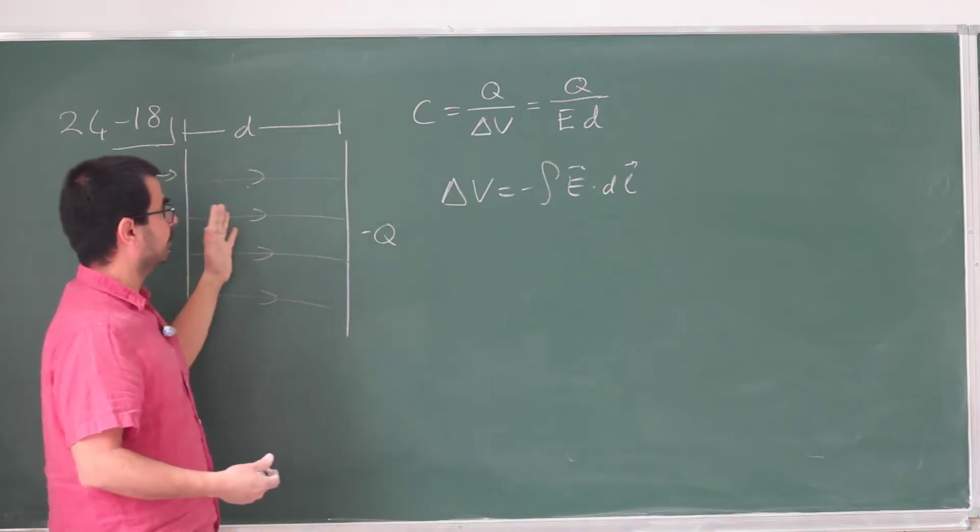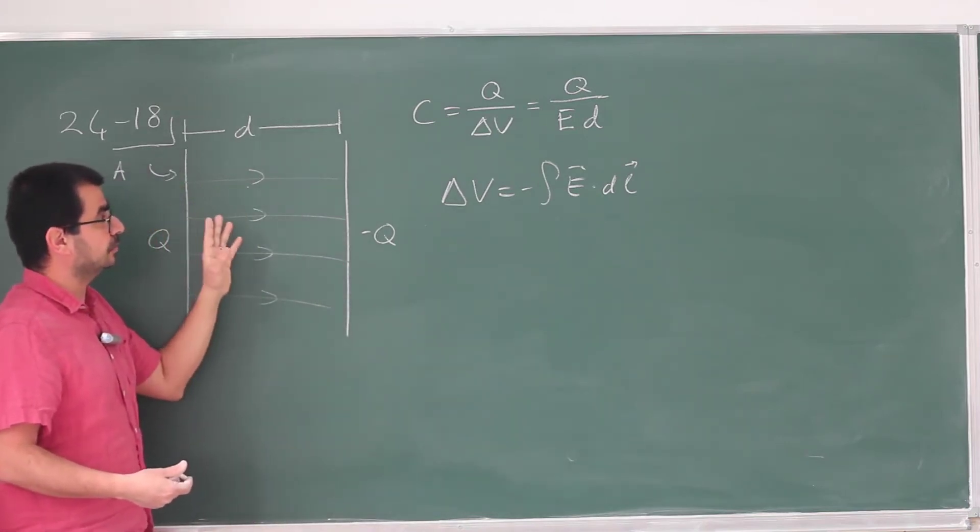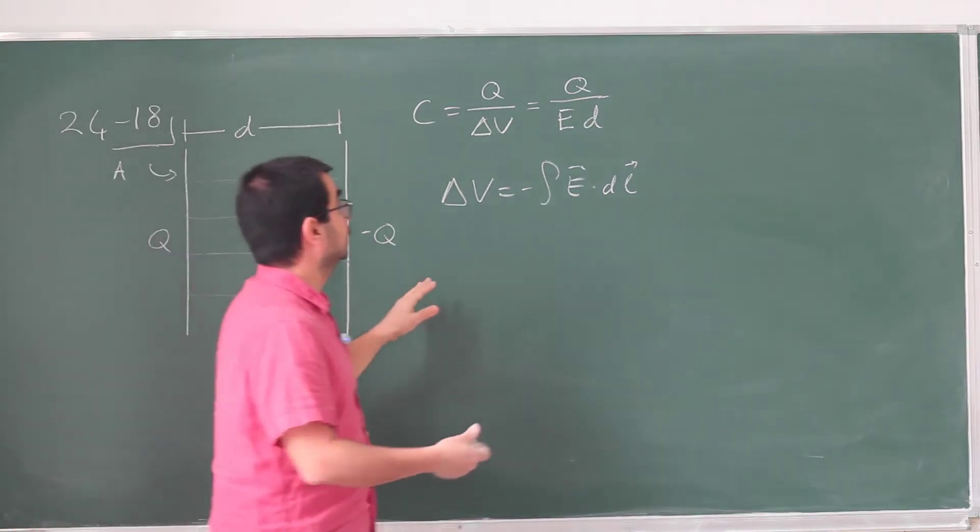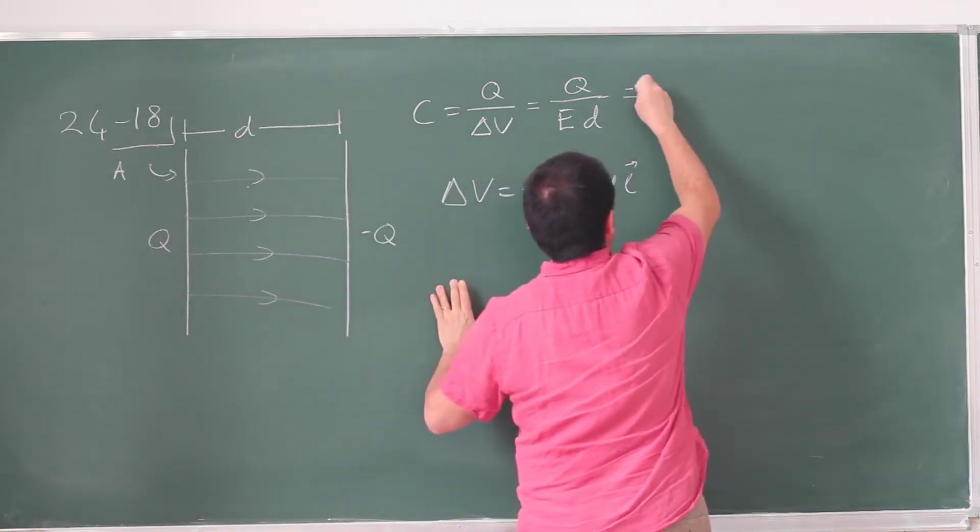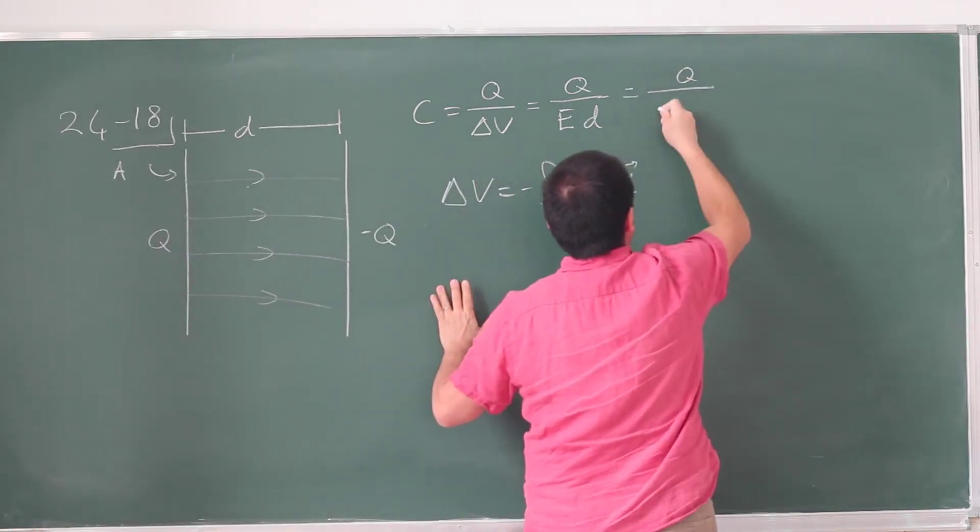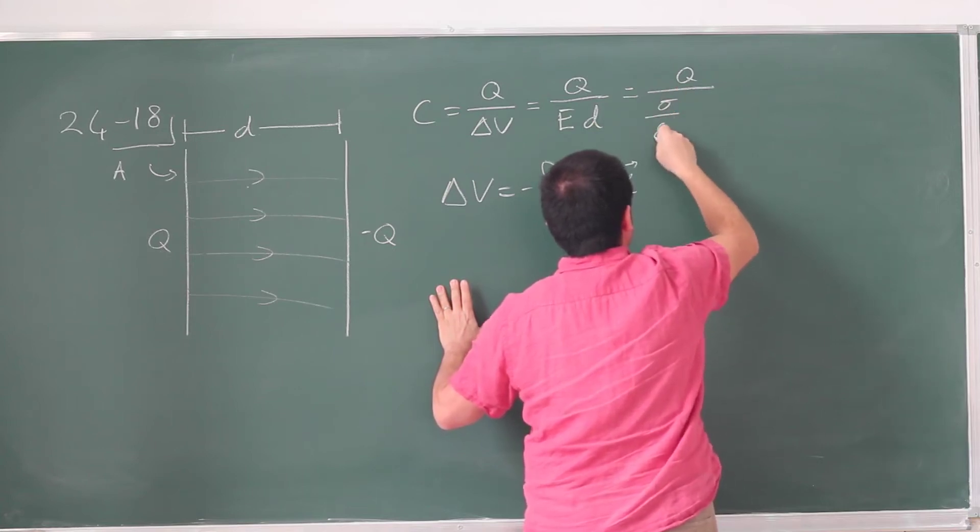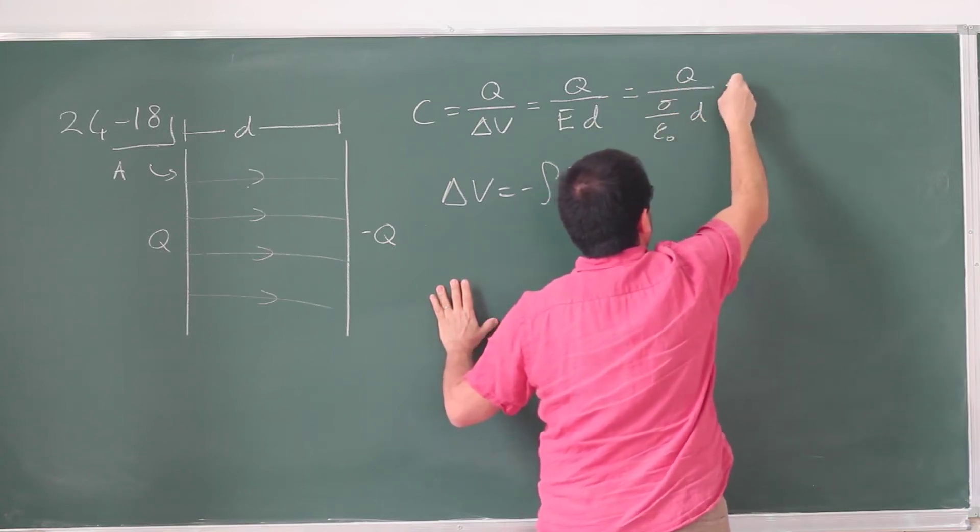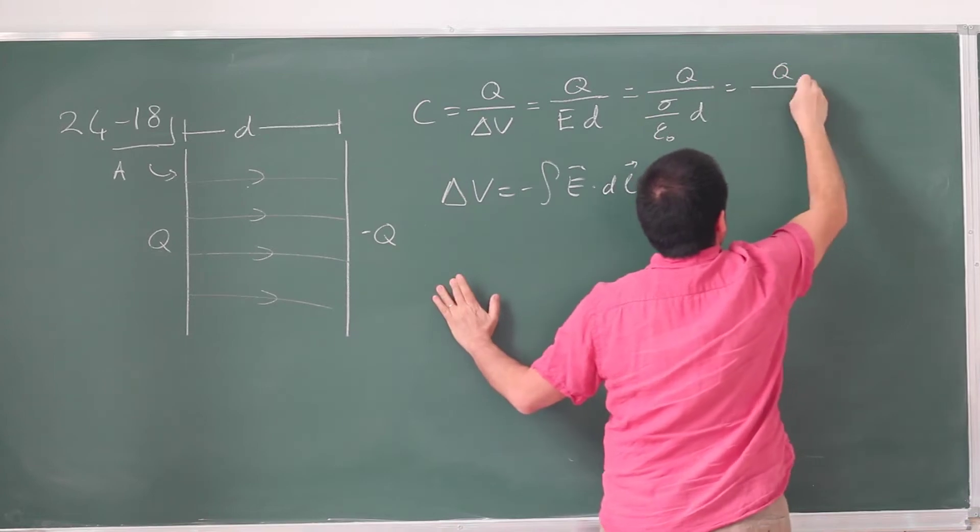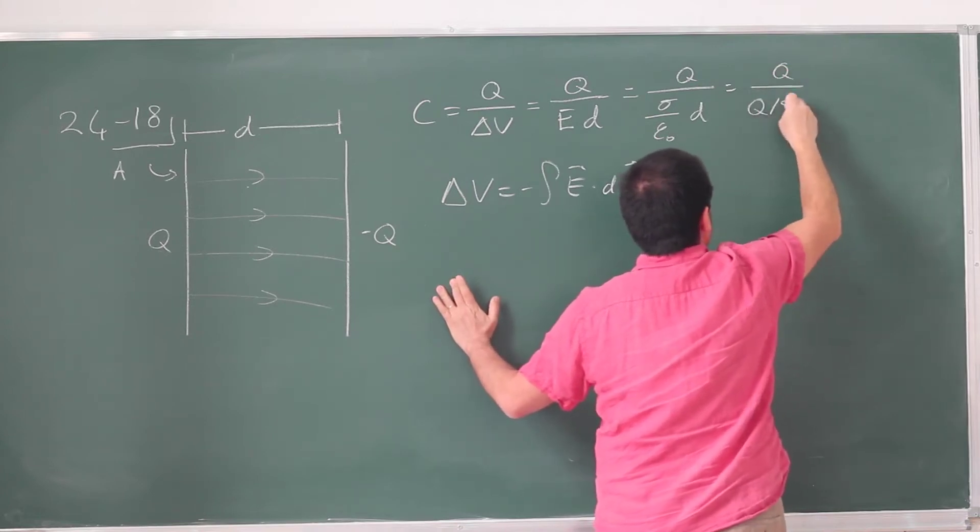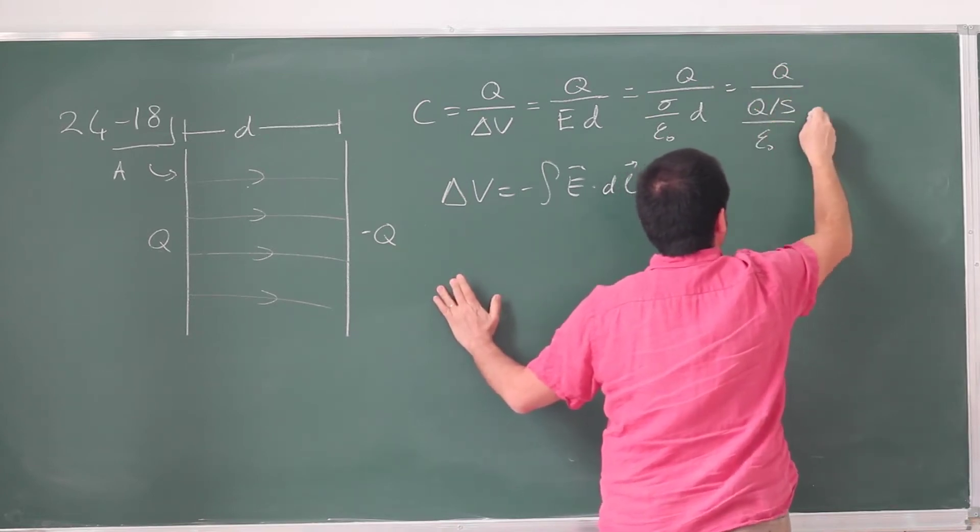So for a parallel plate capacitor, it's constant, so I can just take it out, and this becomes E times D. We did this already. I can write the expression for the electric field. It's going to be σ by ε₀ times D. And that σ is, of course, Q divided by A by ε₀, D.